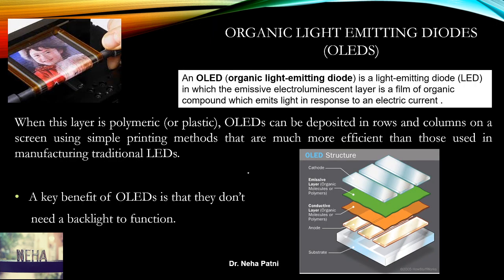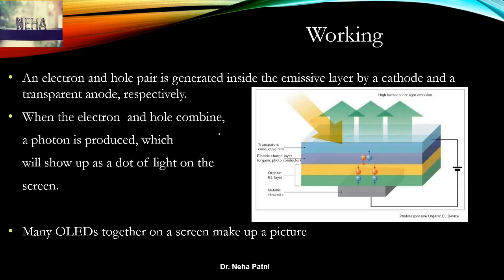An OLED is a light emitting diode in which the emissive layer is a film of organic compound that emits light in response to electric current. Simple printing methods are used and the pixels are deposited in a row-and-column fashion. Organic molecules or polymers serve as both the conductive and emissive layers, so no backlight is needed. An electron and hole pair is generated inside the emissive layer by a cathode and a transparent anode; when they combine, a photon is produced, appearing as a dot of light, and many such OLEDs together make up a picture.